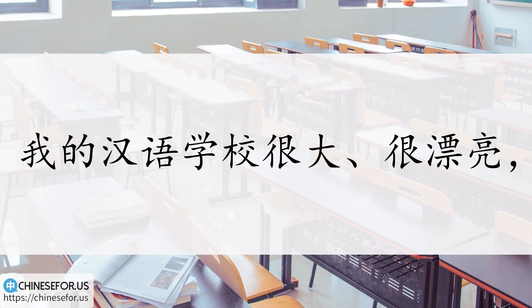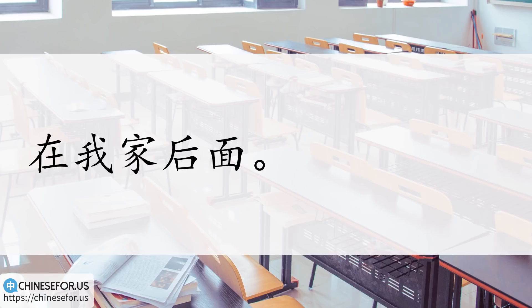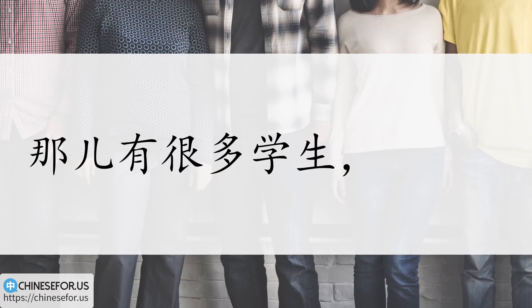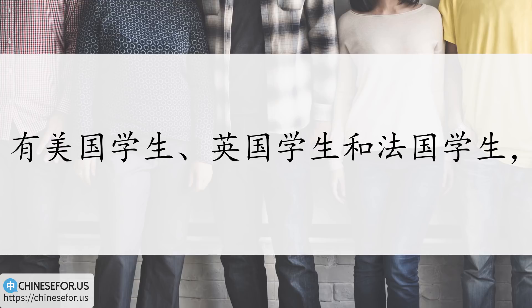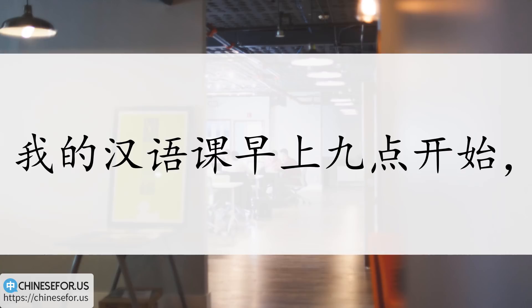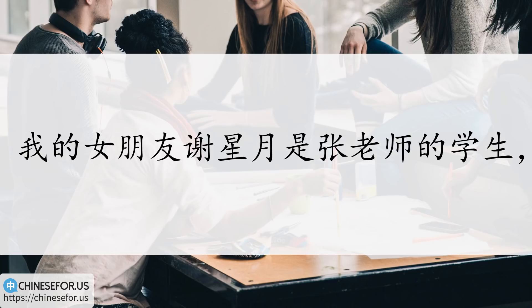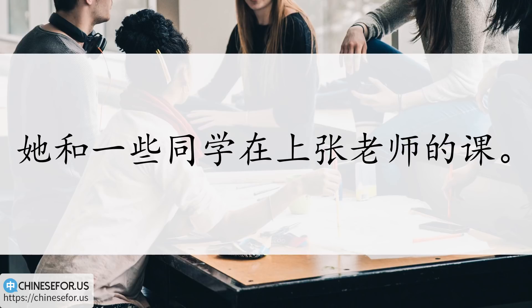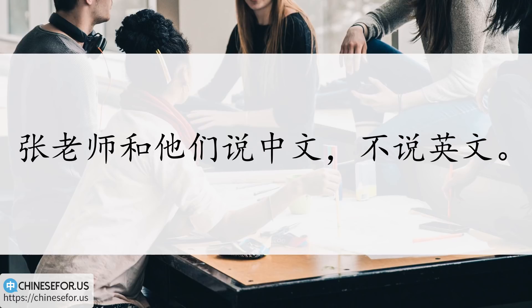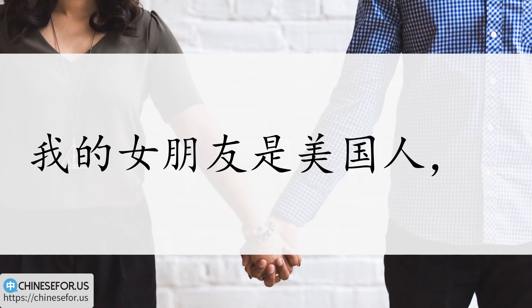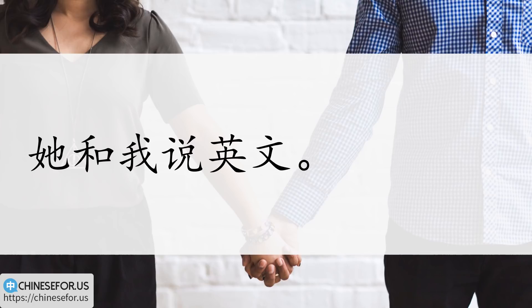非常好。And now let's read it one more time with characters only. 我的汉语学校很大，很漂亮。在我家后面。那儿有很多学生。有美国学生，英国学生，和法国学生。没有中国学生。我的汉语课早上九点开始。我八点来学校。看见张老师在给一些学生上课。我的女朋友谢兴月是张老师的学生。他和一些同学在上张老师的课。张老师和他们说中文，不说英文。我的女朋友是美国人。他和我说英文。